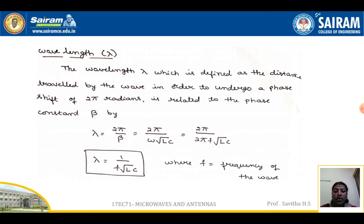We already derived that the phase constant beta is equal to omega times the square root of LC. So 2π divided by omega can be replaced, giving lambda equal to 1 divided by f times the square root of LC, where f is the frequency of the wave.